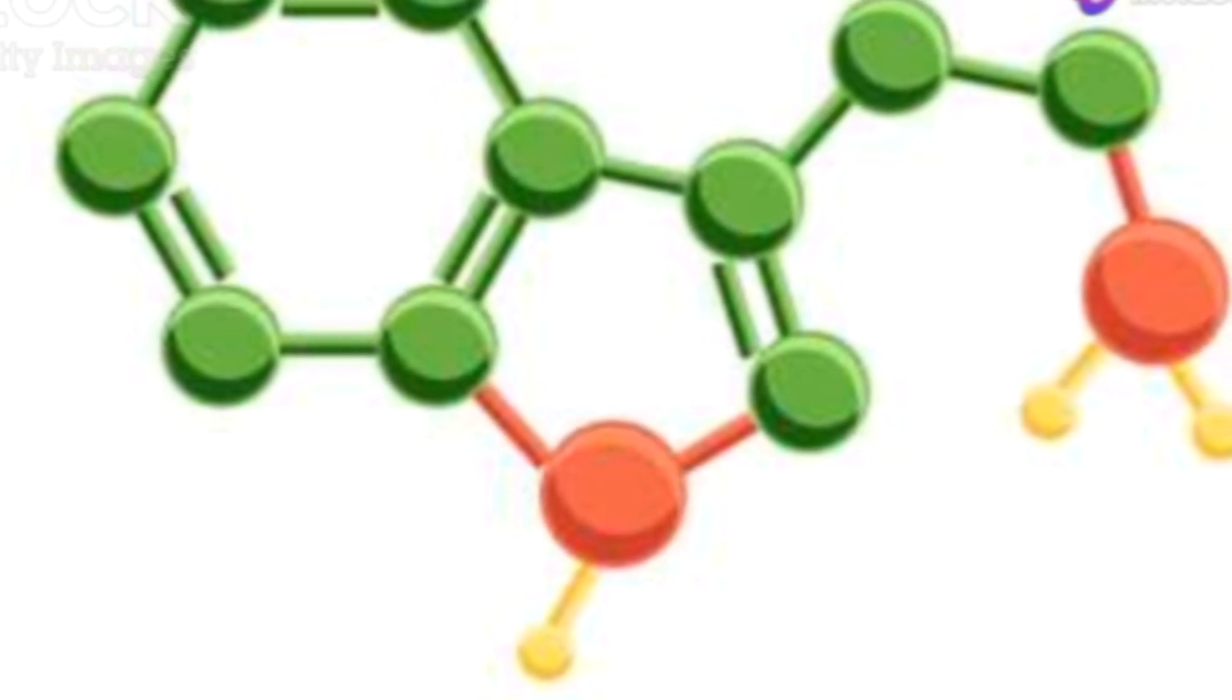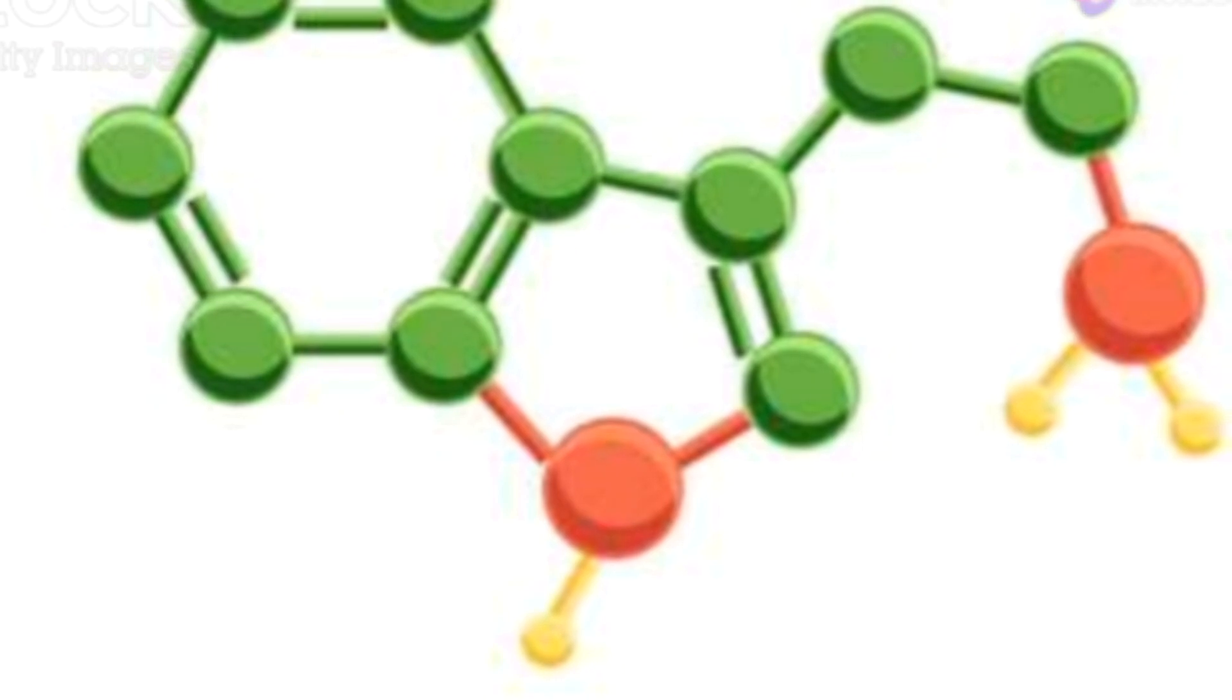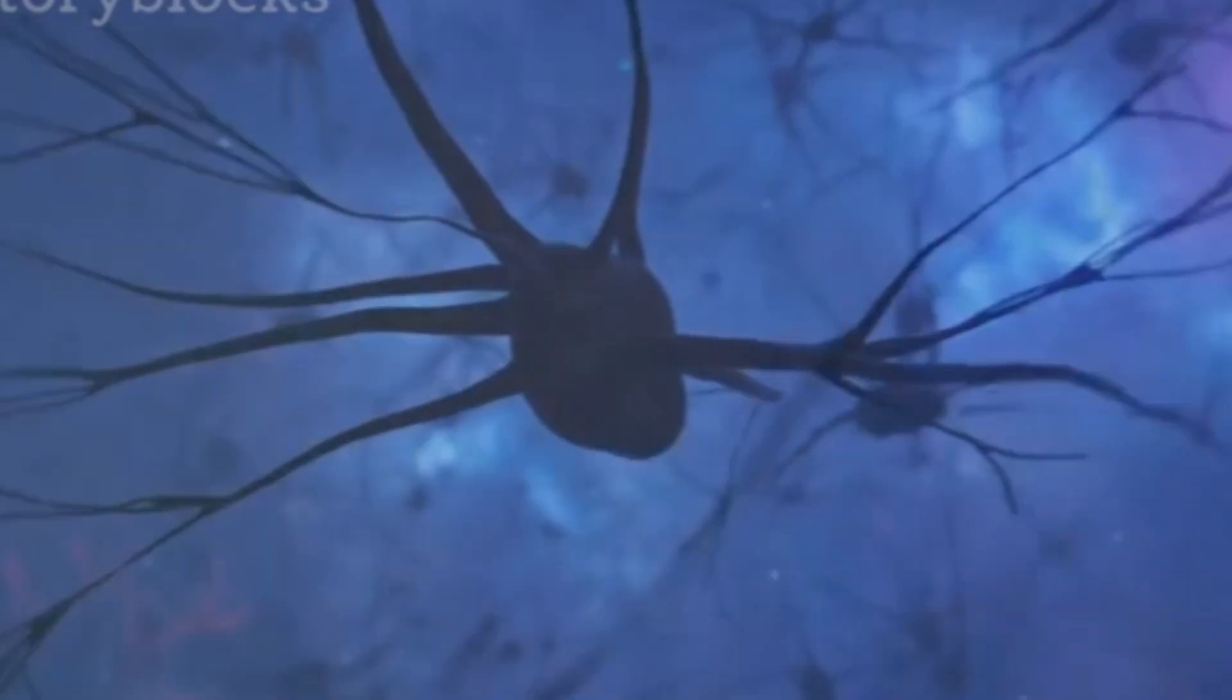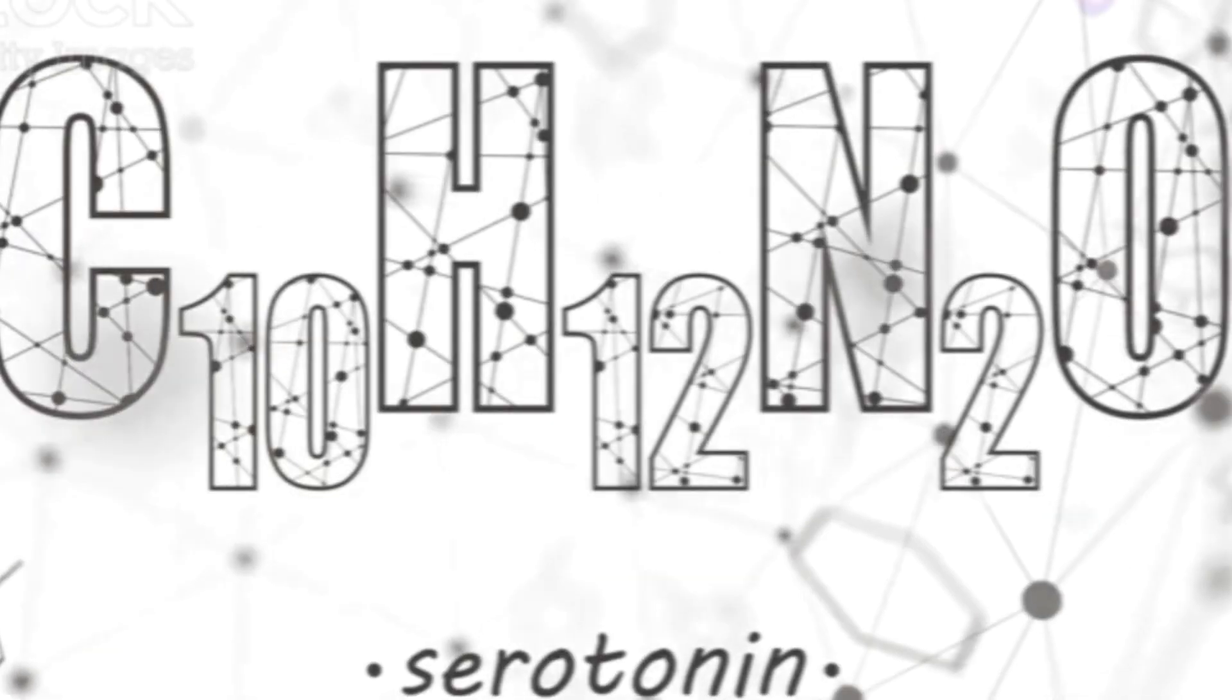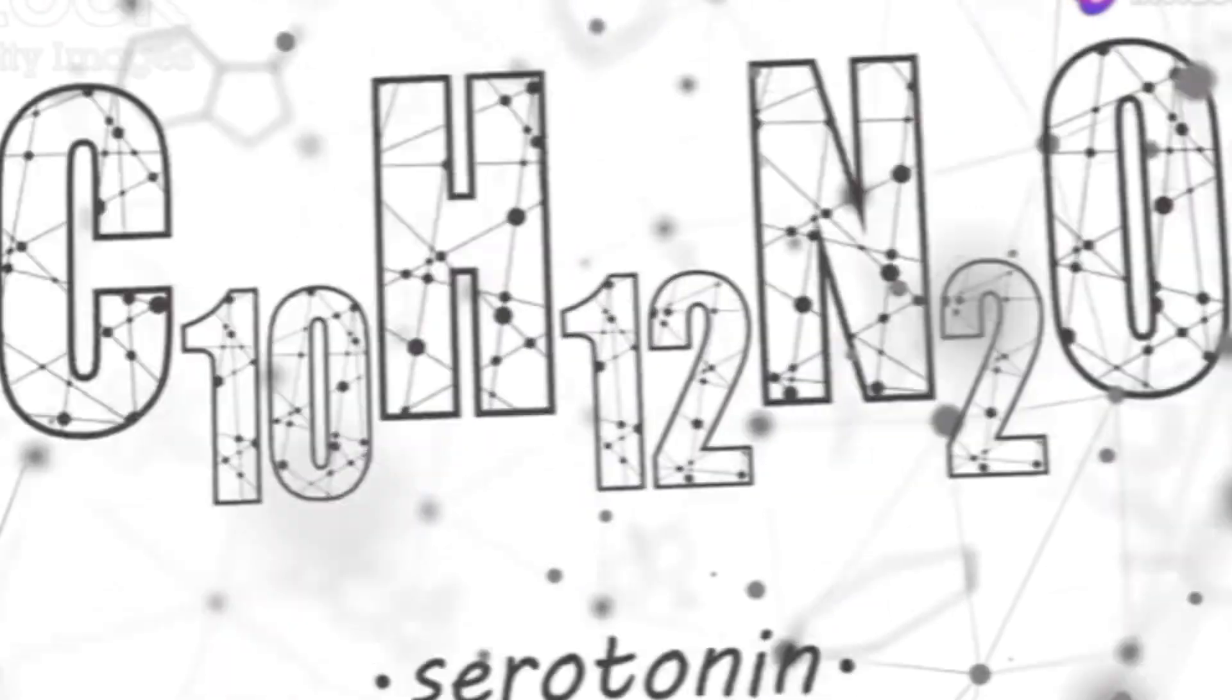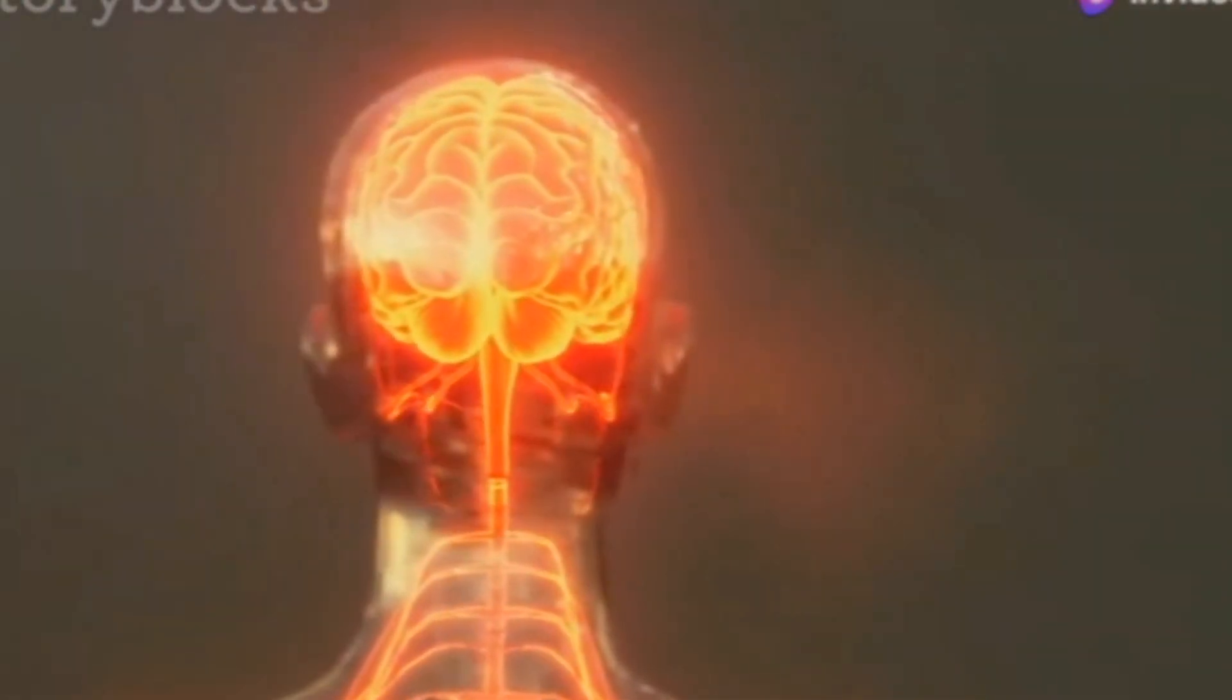Disorders related to serotonin include depression and anxiety. Low levels of serotonin are often found in people with these conditions. Treatments like selective serotonin reuptake inhibitors, or SSRIs, aim to increase serotonin levels in the brain, helping to alleviate symptoms and improve mood.